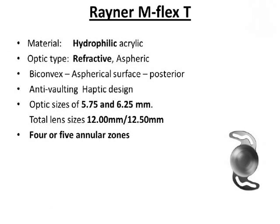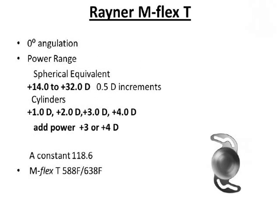The Rayner multifocal toric IOL is a hydrophilic refractive IOL having 4 or 5 annular zones. It is available in optic sizes of 5.75 and 6.25mm and an overall length of 12 to 12.5mm. It is available from +14 to +32 diopters in the spherical range and cylinders from +1 to +4 diopters. These IOLs have an add power of +3 or +4 diopters.